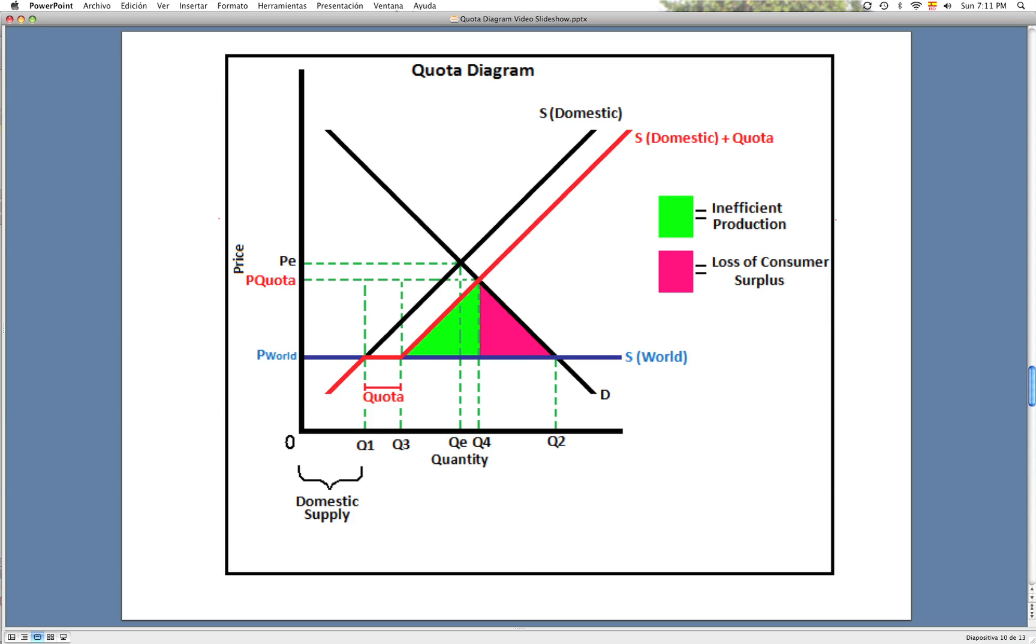The loss of consumer surplus in the purple area represents the quantity that is no longer demanded. Consequently, this creates a deadweight loss of welfare because of the loss of consumer surplus.